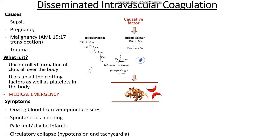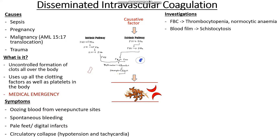What kind of investigations would we want to do in someone we suspect has DIC? The first thing, as in most bleeding disorders, is a full blood count. In DIC we tend to see a thrombocytopenia, because we've used up the platelets by sticking them to all the uncontrolled fibrin clots being formed. We also see a normocytic anaemia because our red cells are simply being sheared by the sharp fibrin sheets. On a blood film we see schistocytosis, which essentially means sheared or cut-up red cells.